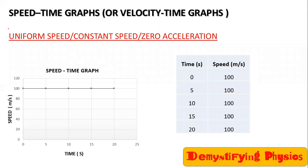Let us do speed-time graphs today. The first case is when a body is moving with uniform speed, or constant speed. Since speed is the same, acceleration is zero. Speed and velocity are used in the same sense in the graphs, so constant speed means zero acceleration.